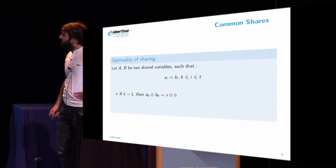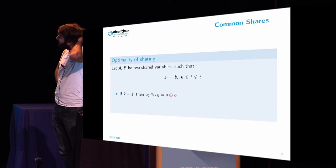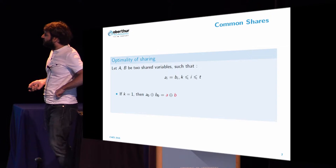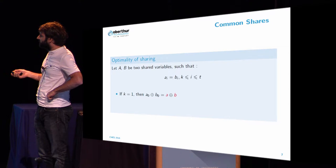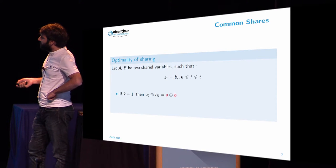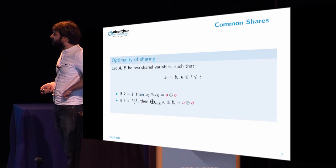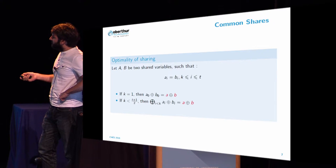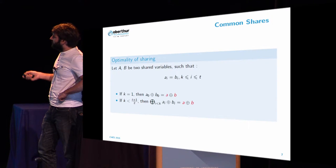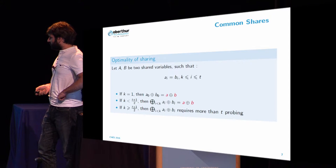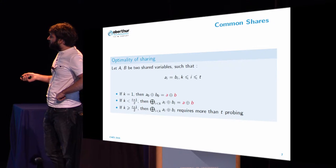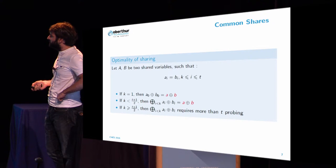So is it an optimal chaining? Let's take the case where we have all the shares that are equal from index 1, and this is not secure because the attacker can access A0 and B0, compute the XOR of them, and you will get A plus B, which is a sensitive variable. And this is true as long as the index of the common shares is less than T plus 1, which means we have more than half of the shares in common. But this won't be true if we take less than half of the shares in common, because an attacker will require to access more than T values to compute the sensitive value A plus B.